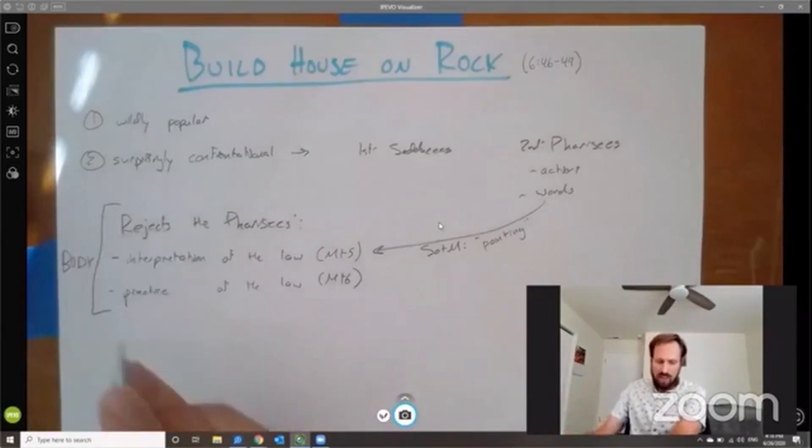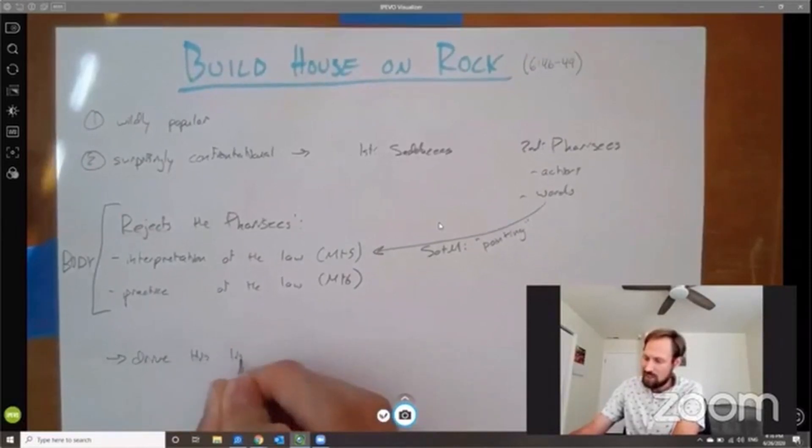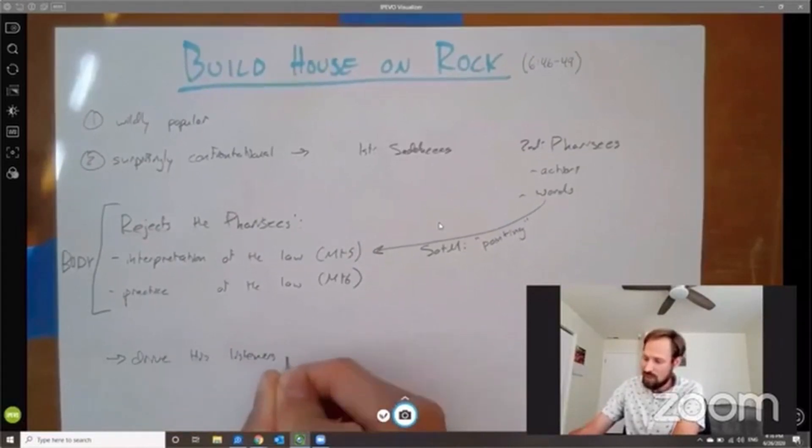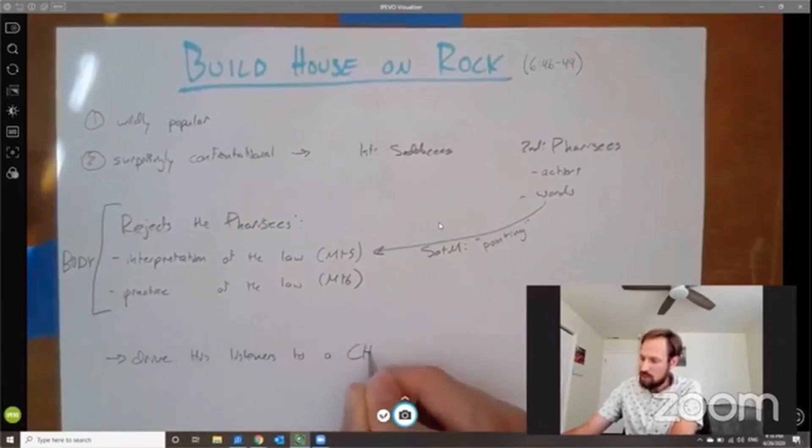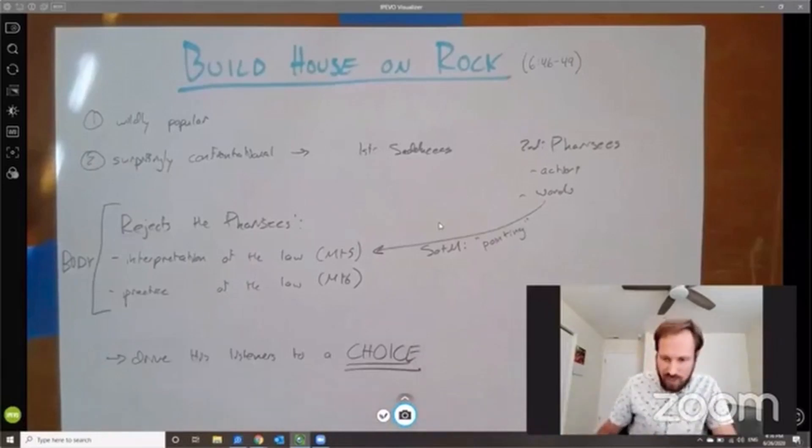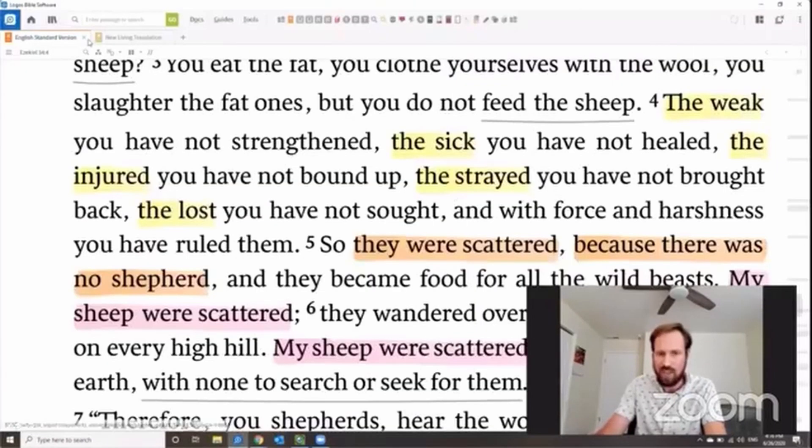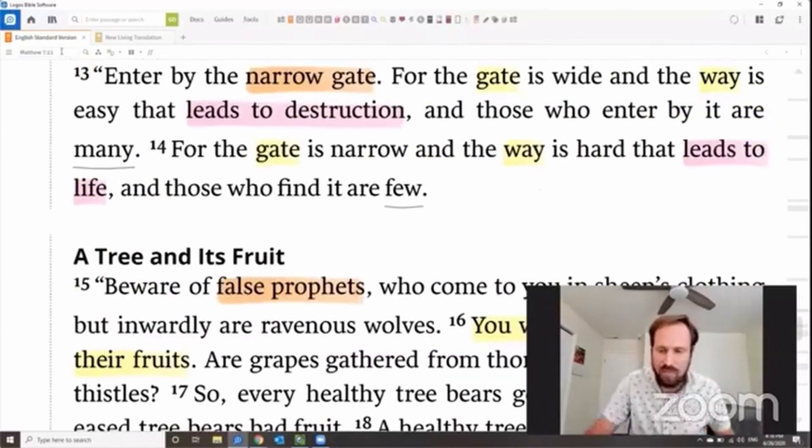So this is what I would call the—let me get a big—there we go. This is the body of the Sermon on the Mount. Now, Jesus next, in the conclusion, is going to drive his listeners to a choice. I'm going to make this in big caps. All caps. Drive his listeners to a choice. And he does this with a couple of powerful illustrations. Let's take a look at those in Matthew 7. This is Jesus' conclusion. Matthew 7, 13, I think it is.